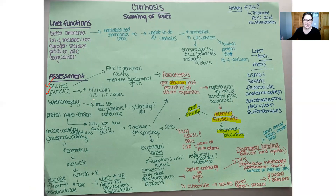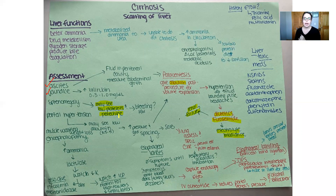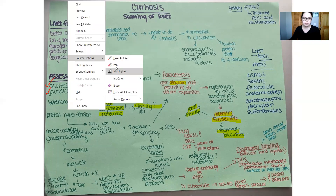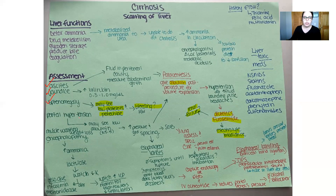With splenomegaly you may also see low platelets. Normal platelet count is 145,000 to 450,000. Below 145,000-150,000 you're going to see petechiae, and sometimes a term called spider angioma — those little broken blood vessels due to bleeding risk. Watch their H&H and look out for any bleeding symptoms that could be related to splenomegaly and portal hypertension.